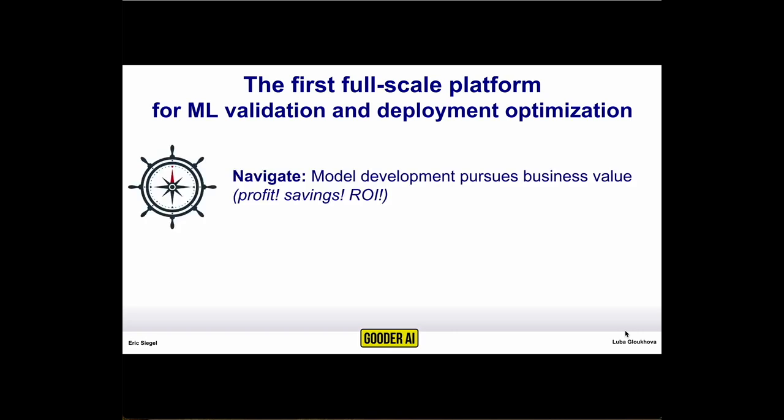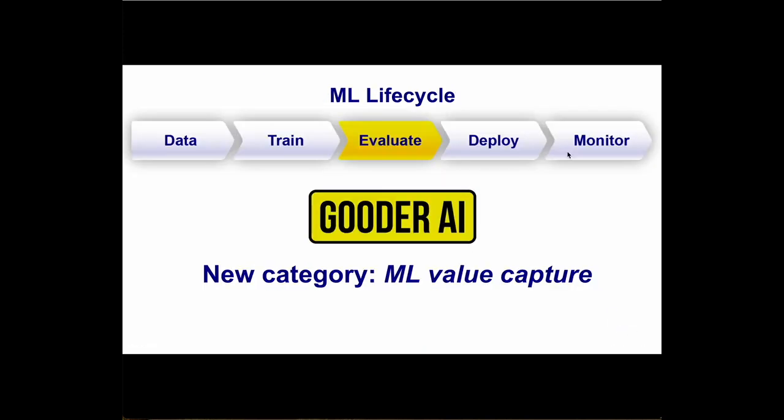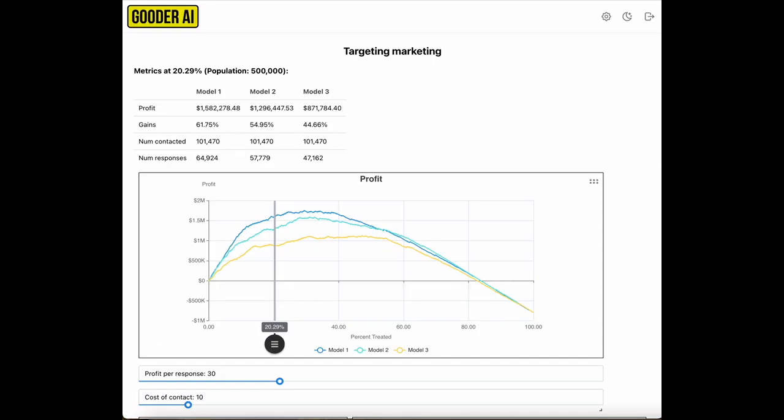By doing that, now model development is navigating towards business value. And the second business problem that this solution solves is that it provides stakeholders visibility. So the client of the data scientist, the person in charge of operations meant to be improved by the model, this person can now see how well the model performs in concrete business terms, how much value from a business perspective it could potentially deliver, depending on how it was deployed. So let's jump right into the demo.